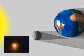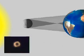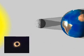Where the partial shadow of the moon sweeps across the earth, a partial eclipse of the sun occurs. Where the full shadow of the moon is focused above the earth, an annular eclipse of the sun occurs. Where the full shadow of the moon falls on the earth, a total eclipse of the sun occurs.